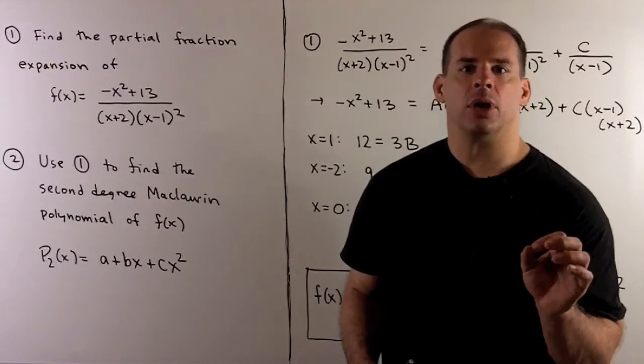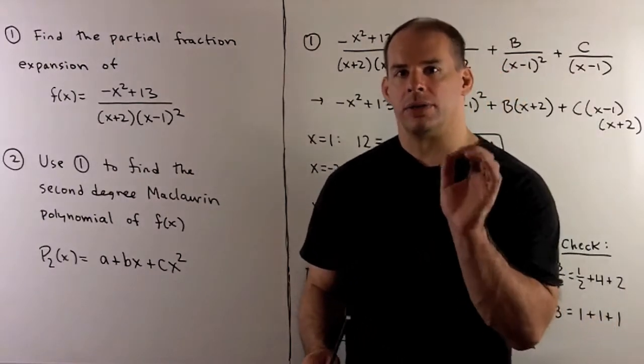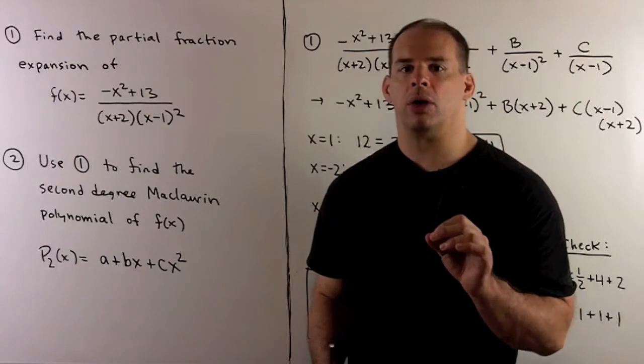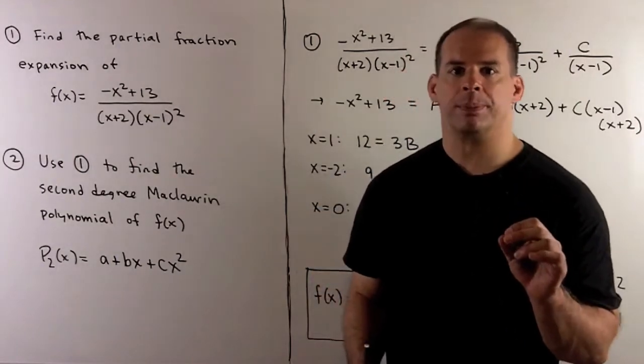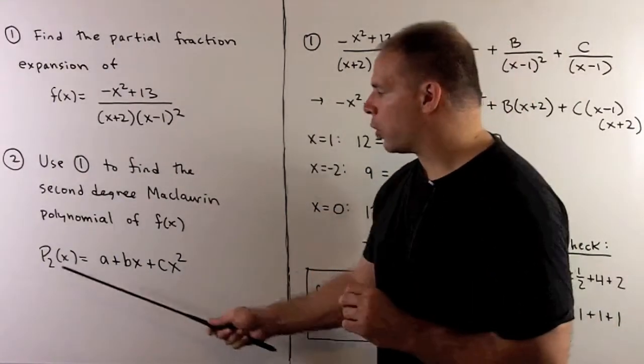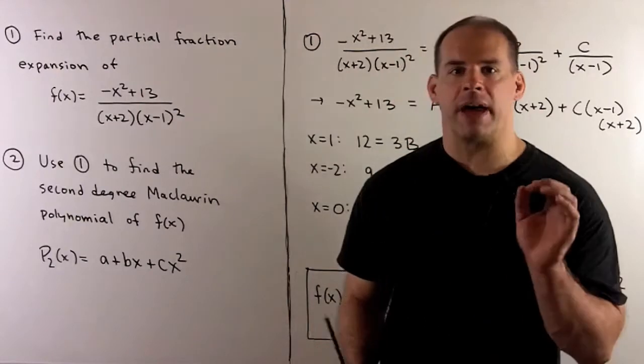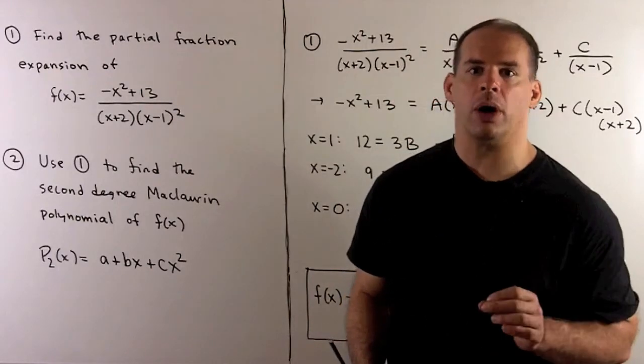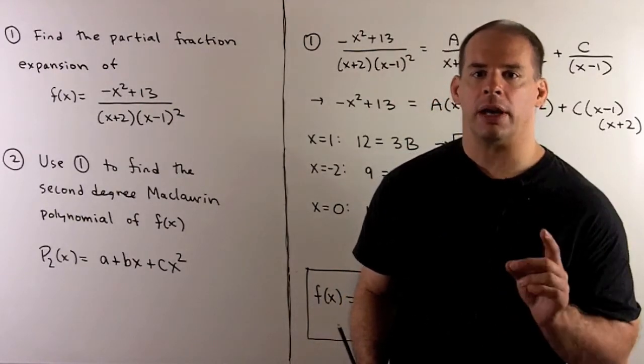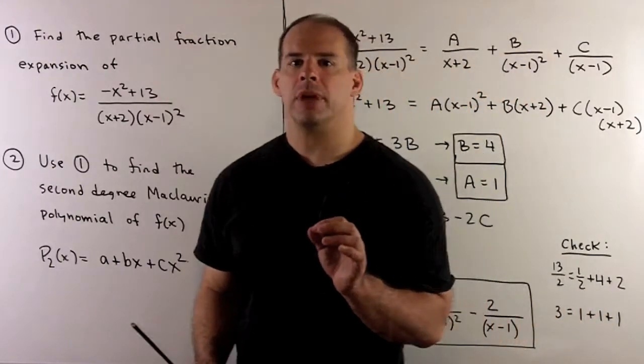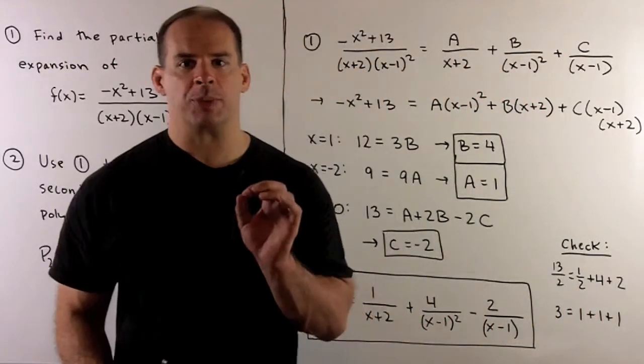Once we have that, I want to find the second-degree Maclaurin polynomial for f(x). So that'll be the quadratic that best fits f(x) at x equal to zero. The first part is just a straightforward partial fraction expansion.